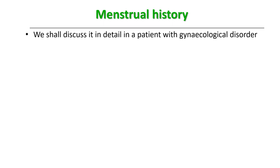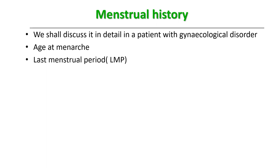Menstrual history — we will discuss it in detail when dealing with a patient with a gynecological disorder. Begin with the age when she attained her menarche, then ask for the LMP or last menstrual period. Since the patient is not pregnant, we are not jumping to the expected date of delivery; here we ask her menstrual pattern in detail.